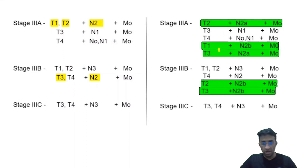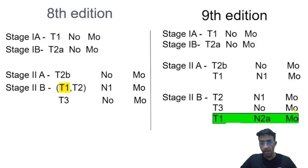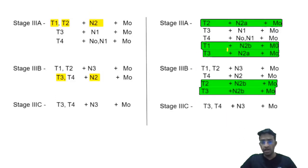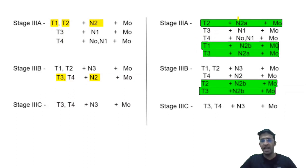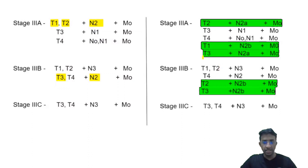Moving on to Stage 3: T1, N2B, M0 is stage 3A in the 9th edition. The major changes involve N2A and N2B. For T2 and T3 with N2A, it is part of stage 3A. If it is T2, N2B or T3, N2B, M0, it comes under stage 3B.